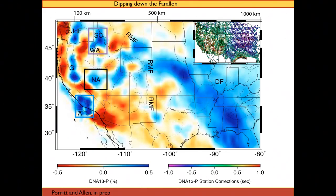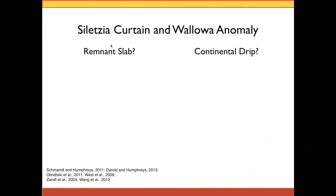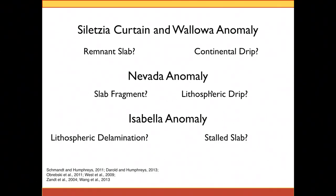I want to ask: what are these anomalies? The Siletia Curtain — Schmandt and Humphreys suggest it's a remnant slab. The Wallowa anomaly — Daryl and Humphreys recently interpreted as a continental drip. The Nevada anomaly — Obrepski et al. and others suggest it's a slab fragment, while West et al. 2009 suggest a lithospheric drip. The Isabella anomaly has the biggest controversy: some suggest lithospheric delamination, others a drip, and Don Forsyth and others suggest a stalled slab.